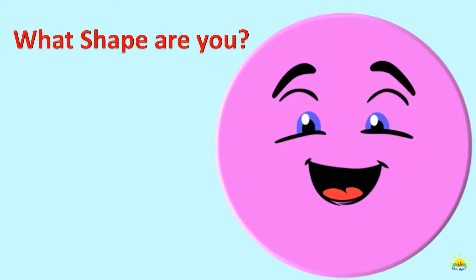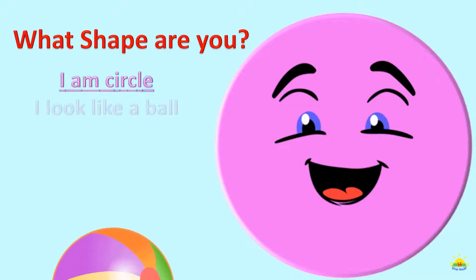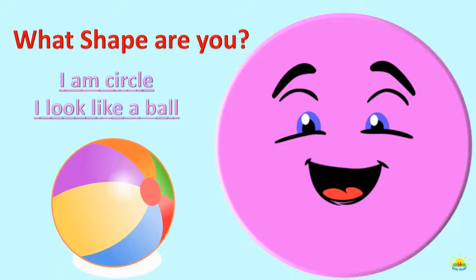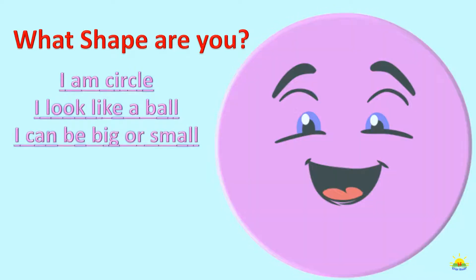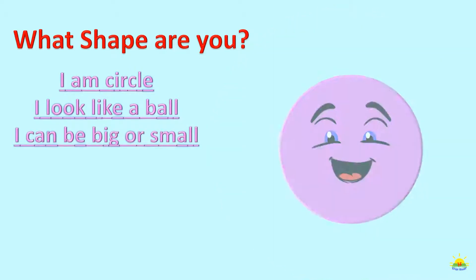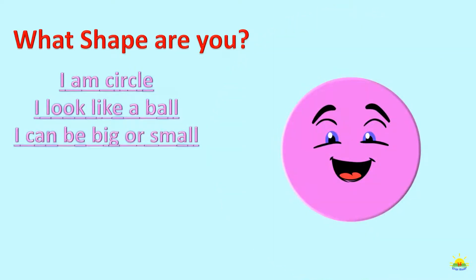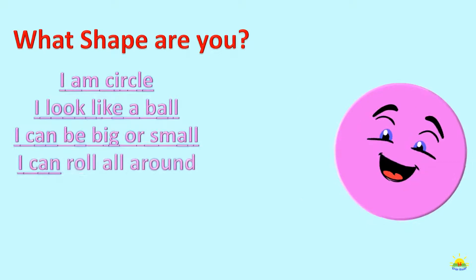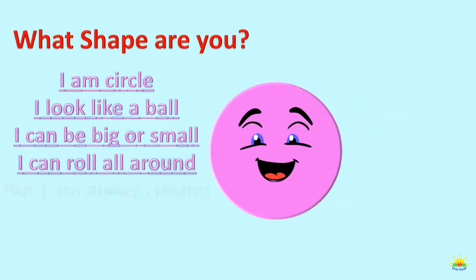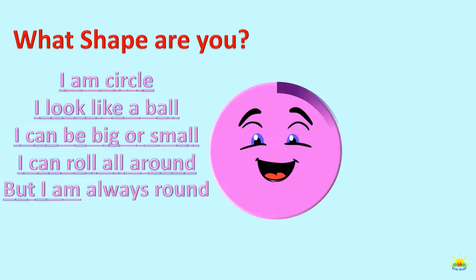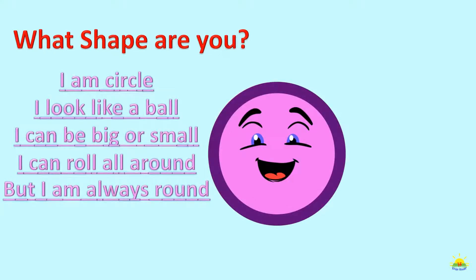What shape are you? I am circle. I look like a ball. I can be big or small. I can roll all around, but I am always round.